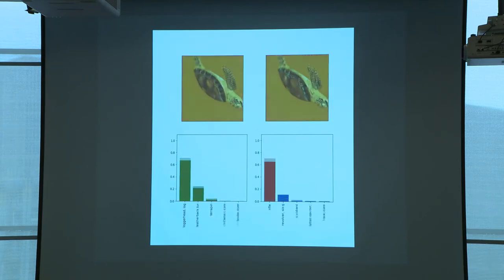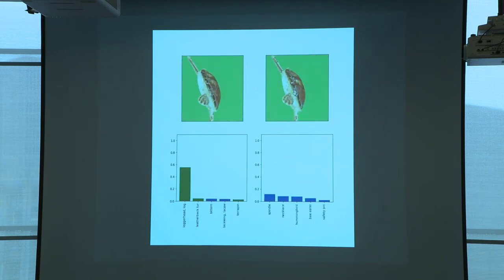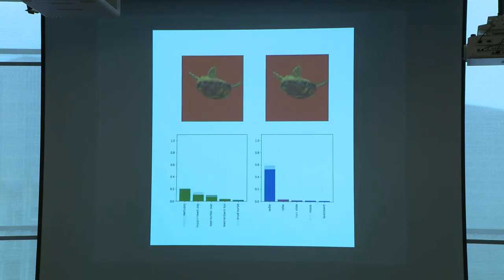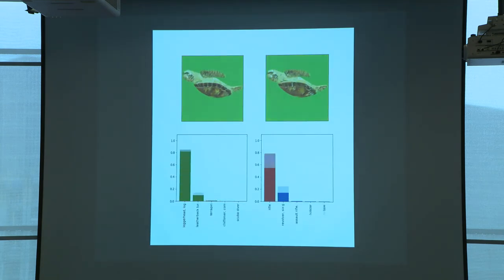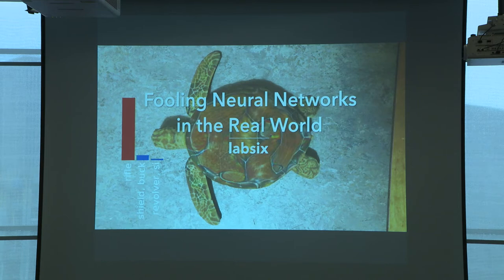In simulation, on the left is a normal turtle — a loggerhead — and on the right is an adversarial turtle classified as adversarial from several angles. We then actually 3D printed it — finding a manufacturer that could print in color. We modeled manufacturing inconsistencies and after several iterations produced a 3D adversarial turtle that's identified as a rifle.